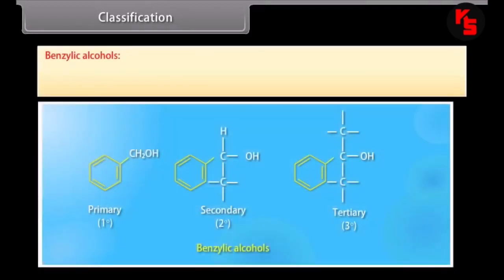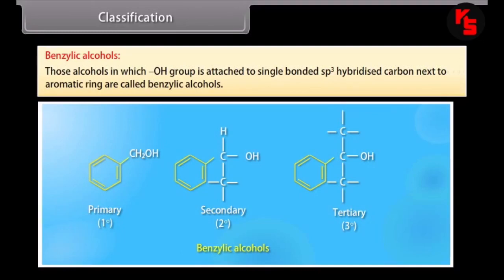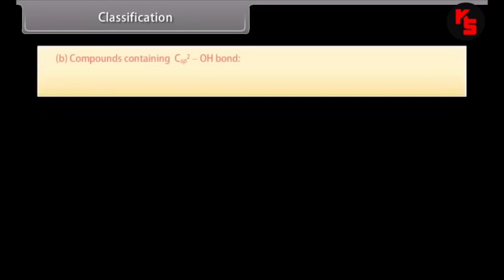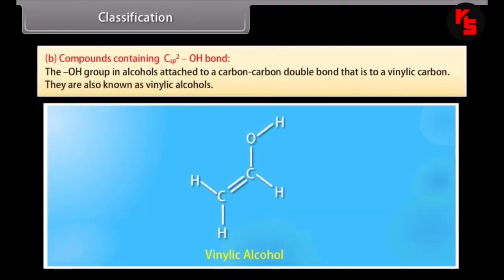Benzylic alcohols are those in which the hydroxyl group is attached to a single-bonded sp3 hybridized carbon next to an aromatic ring. Compounds containing sp2 hybridized carbon bonded with a hydroxyl group — where the hydroxyl group is attached to a carbon-carbon double bond, that is, to a vinylic carbon — are also known as vinylic alcohols.